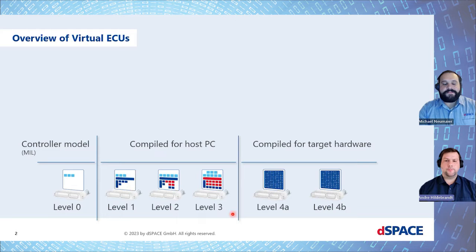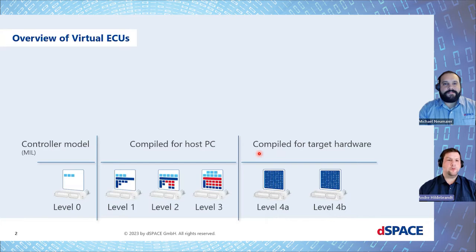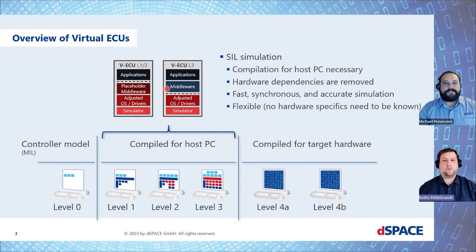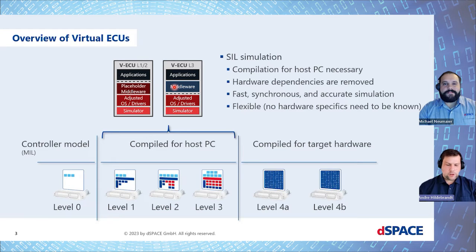I would like to distinguish between two different categories here. First, we have up to Level 3, where we can compile for a host PC. And then we have Level 4, where we can compile the virtual ECUs for the real target. Up to Level 3 is what we usually consider as standard or classical SIL simulation. We take software components — as many as possible — like application layer, middleware, or basic software. But we do not include any hardware dependencies, which means we remove modules like MCAL drivers or even the operating system and replace them with modified ones, so that the virtual ECU can be compiled on a standard Windows PC or Linux.